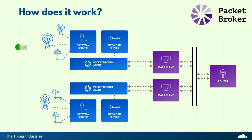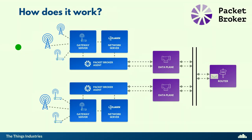So how does it work? If a device is seen by another gateway, traffic goes to the gateway server. The gateway server says this message is not for my network, offloads it to the Packet Broker agent, sends it to the data plane, picked up by the router, sent back to another data plane instance, and then sent to the home network. It's very simple.